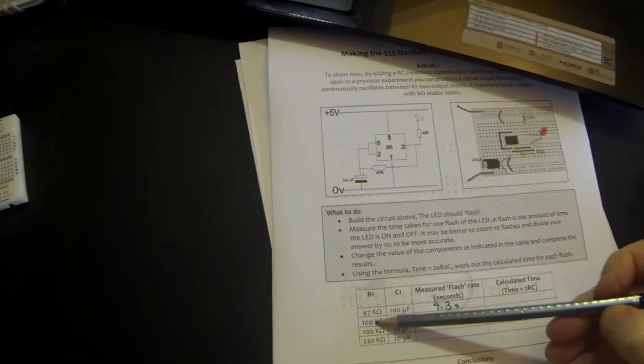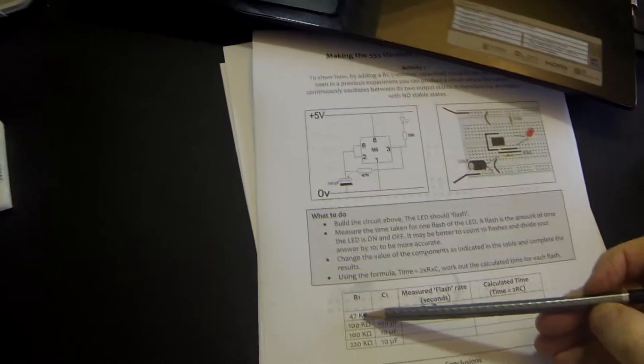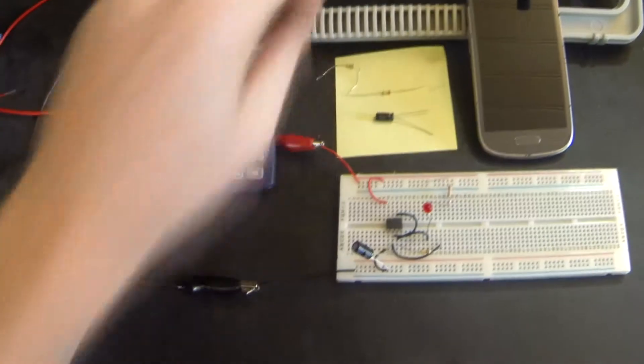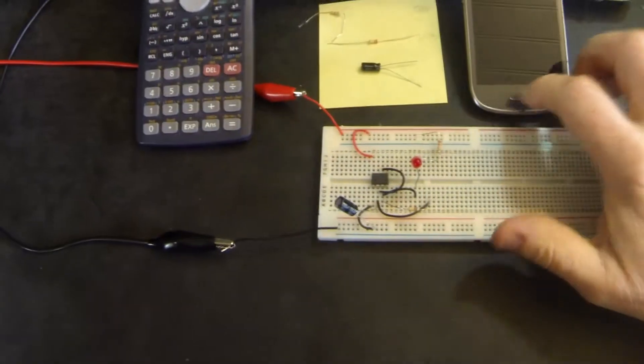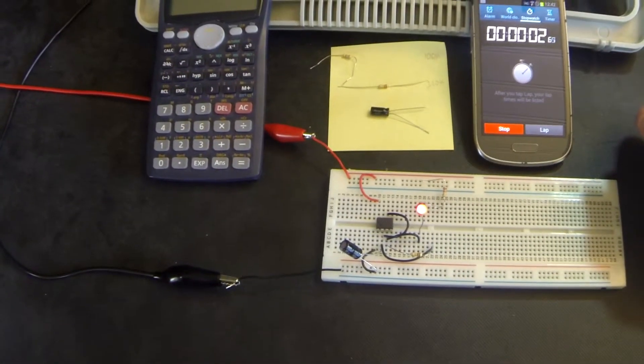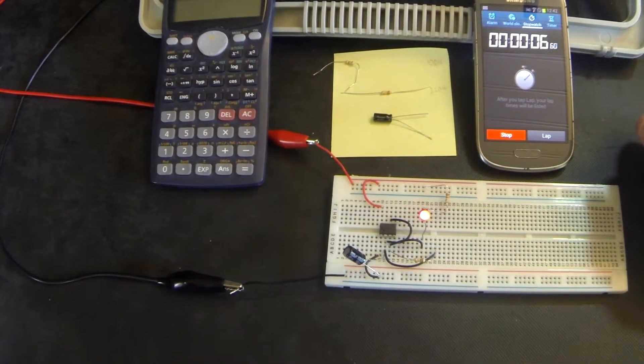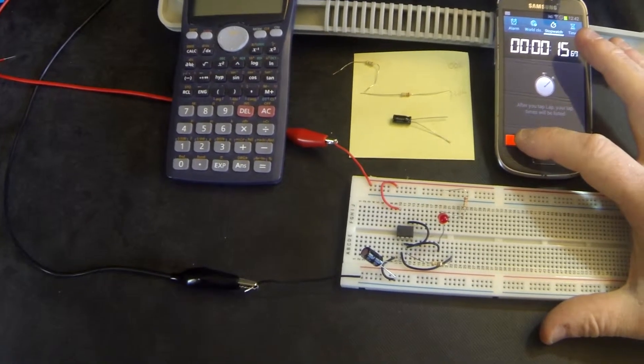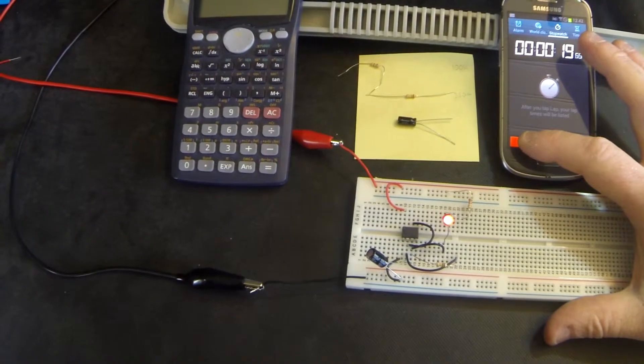So what we're going to do now, we're going to change the value of R1. But we're going to leave the value of C1 the same. So we're changing R1 from a 47K to a 100K. Turn off my power supply. And turn it on. Hopefully the LED will come on. And as soon as it comes on, I'm going to press start. There we go. It goes off. And when it comes on again, I'm going to press stop. 19.83 seconds. So let's enter that into our table. 19.8 seconds. I don't think there's any need to go to two decimal places.